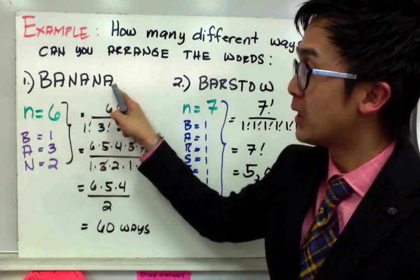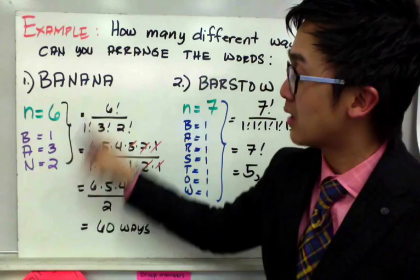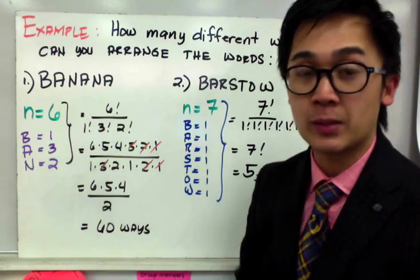And for A, it repeats 3 times, so we have 3 here. And for the letter N, it repeats 2 times, so we have 1, 3, and 2 repetitions.